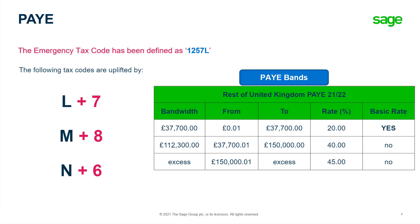For PAYE, the Emergency Tax Code has been defined as 1257L and the tax codes have been uplifted as follows: L by 7, M by 8, and N by 6. You can see the new PAYE bandwidths and the corresponding rates in the table as shown.